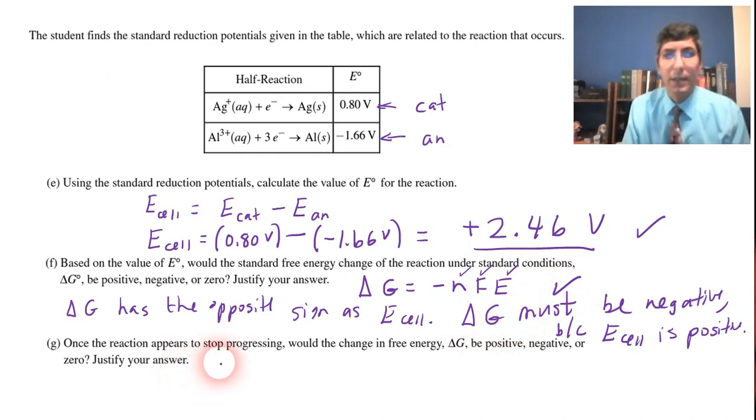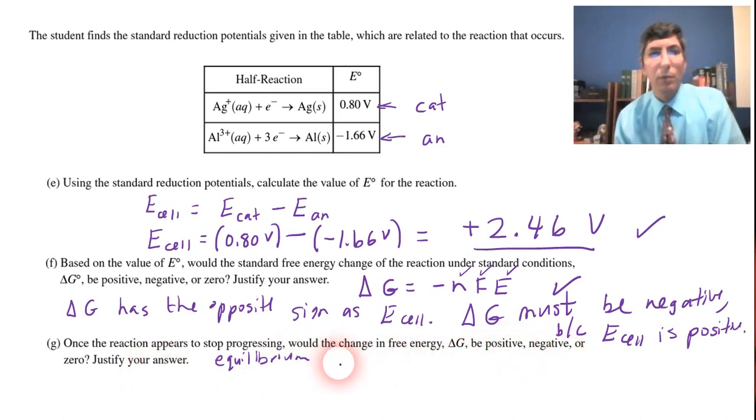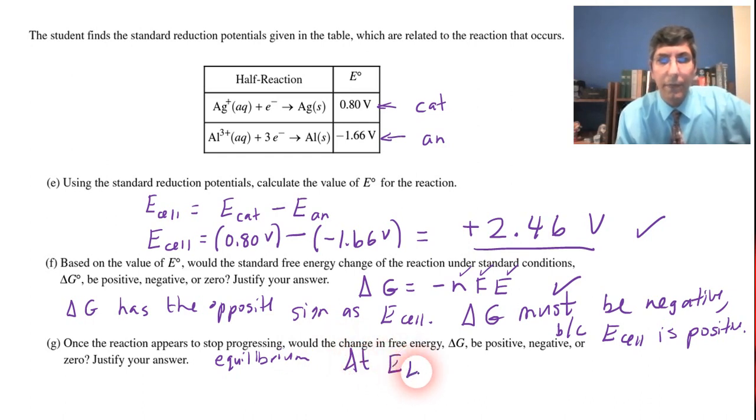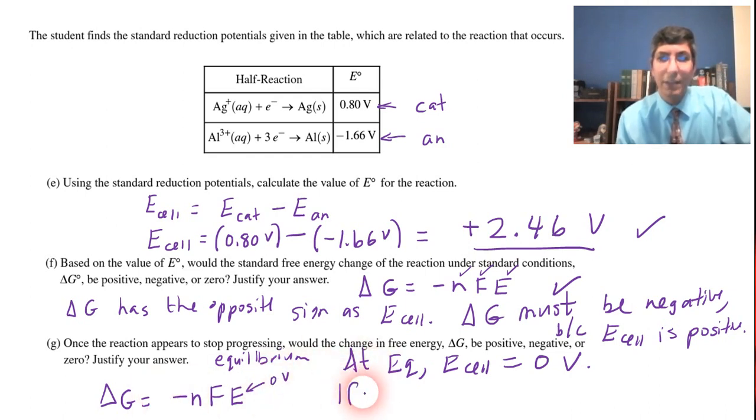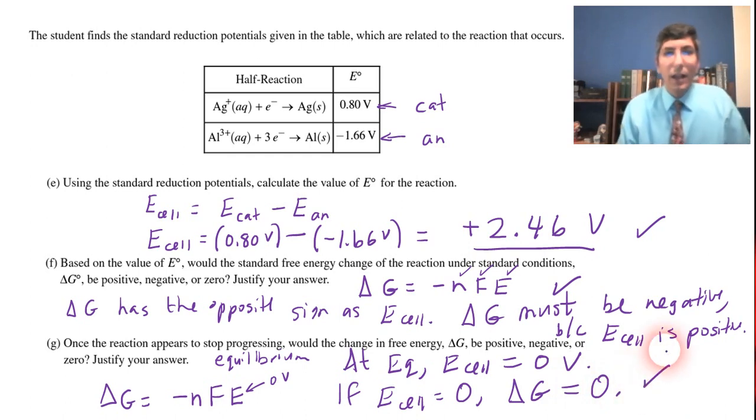And then part G, once the reaction appears to stop progressing, and by the way, in chemistry, we call that equilibrium. Would the change in free energy delta G be positive, negative, or zero? And it says justify your answer. Well, one thing that we talk about in my videos, and hopefully in your AP chemistry class too, is that at equilibrium, E cell for any galvanic cell equals zero volts. So if you were to plug zero volts into this equation here, if E is zero, well then guess what delta G is going to be? It's got to be zero also. And so if E cell is zero, delta G is also equal to zero. So that's one point for that explanation. So there's a lot going on here. 10 points. Hope you got them all. Hope you got a lot of them at least.